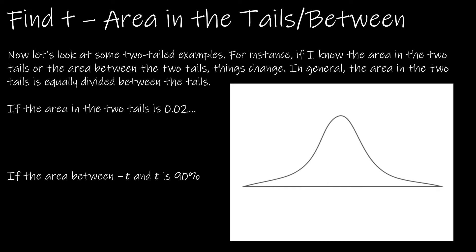Now I want to look at some two-tailed examples. The ones we just looked at was area to the left or area to the right. Now I want to say if I know the area in the two tails or the area between negative t and positive t. This is the same exact thing we talked about with the normal model.